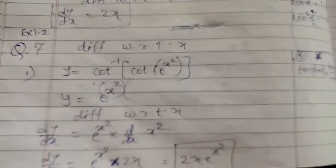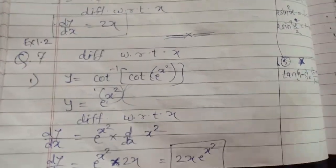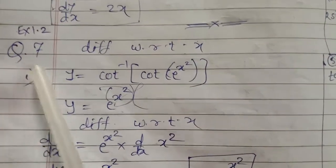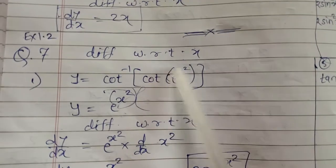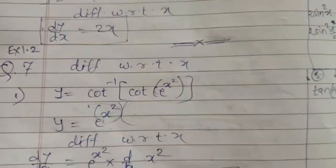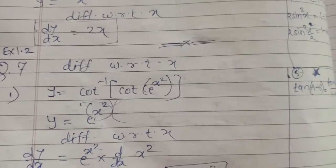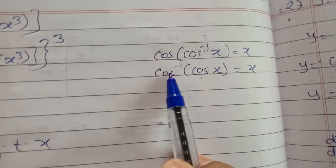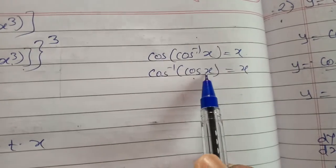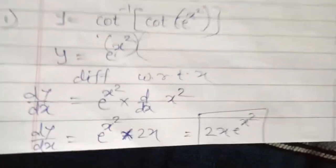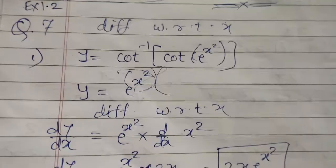Hello students. I am going to continue with the chapter differentiation of standard 12, exercise 1.2, question number 7. The question is differentiating with respect to x. In this question we are going to see examples related to the formula — cos inverse of cos x equals x. All the examples in this question follow this pattern.